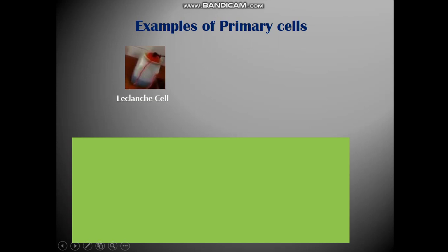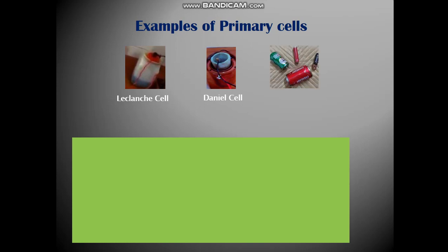We have the Daniel cell, wherein you have a copper vessel, which is filled with concentrated, saturated solution of copper sulfate. This copper vessel acts as a positive terminal. There is a porous pot, which is half filled with dilute acid. And a zinc rod is dipped. The zinc acts as a negative terminal.